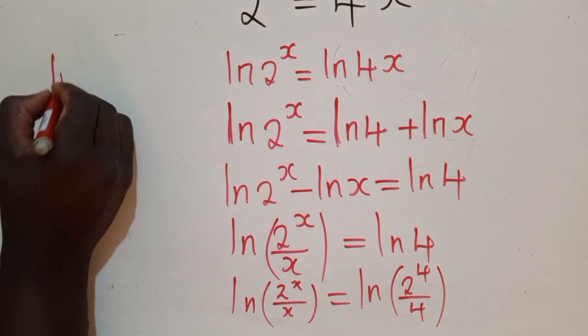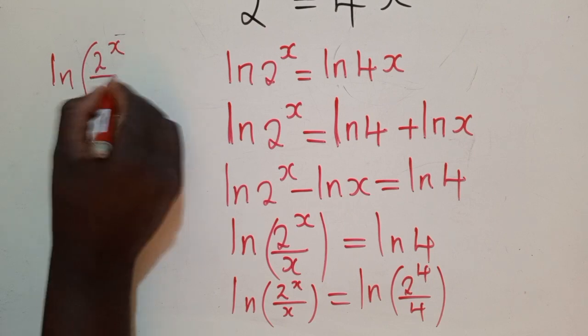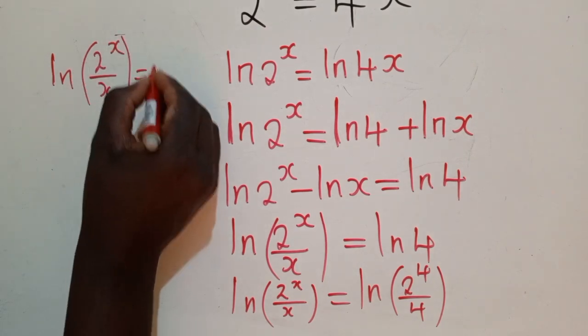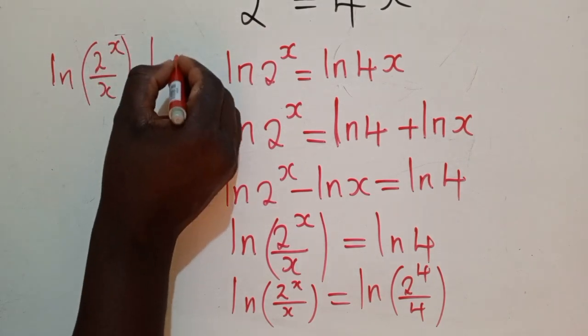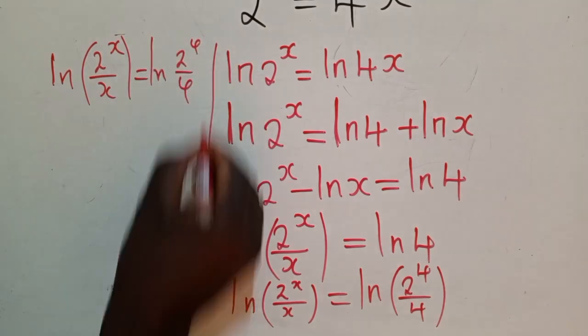So we shall have ln of 2^x over x is equal to ln of 2^4 over 4 right here.